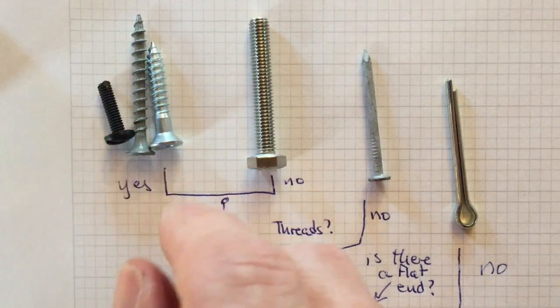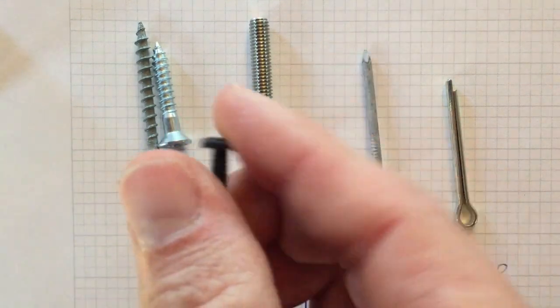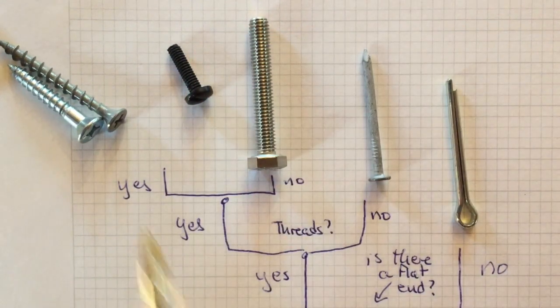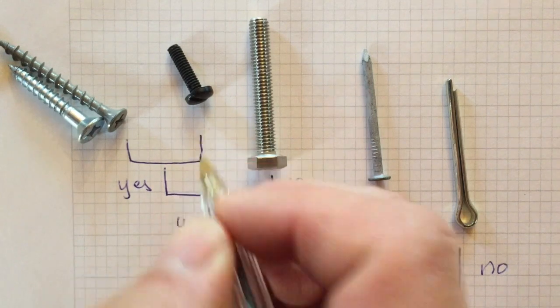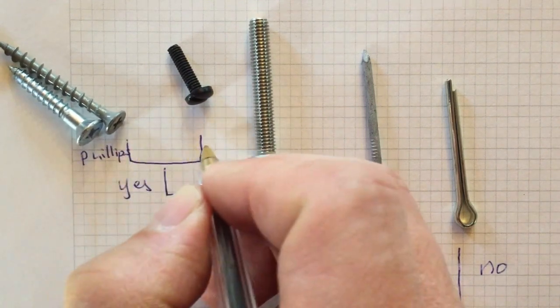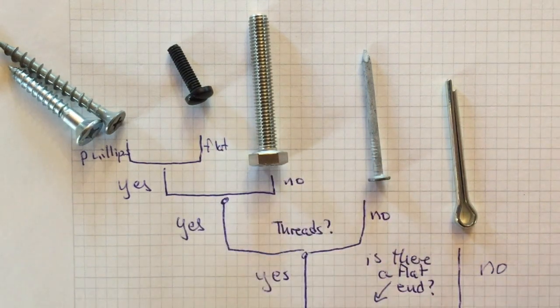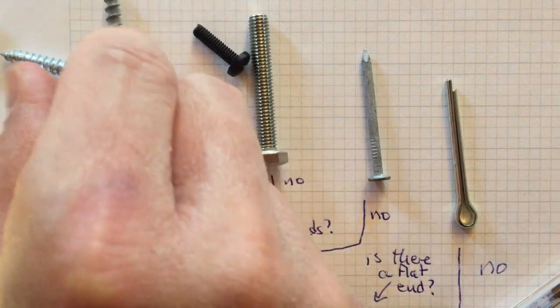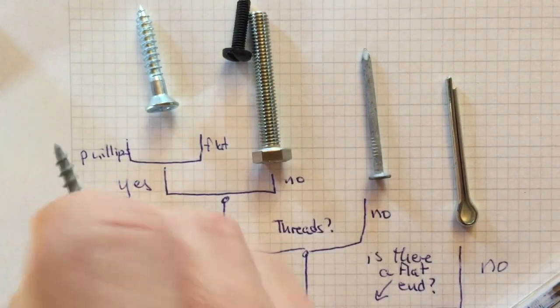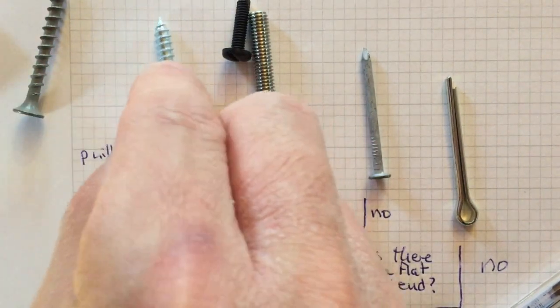Now let's try to separate these further. This little black one has a standard head, but these two have a Phillips head — so these two are a little more similar to each other. We can split and say: Phillips or flat? And then with these two Phillips head screws, we ask: does it have a coating? This one has some sort of coating; this one doesn't. So we split them apart on the basis of coating — yes or no.